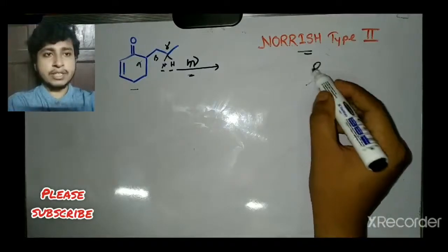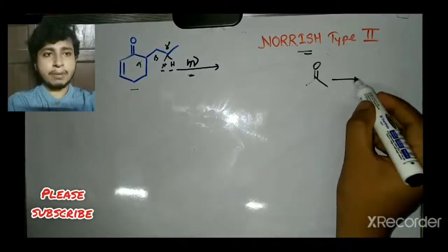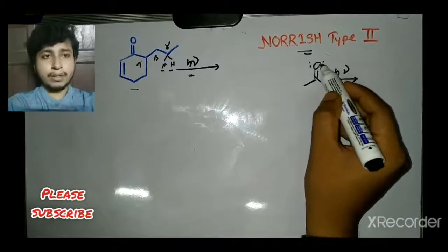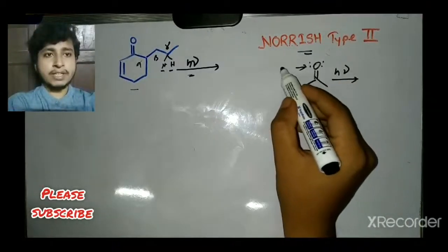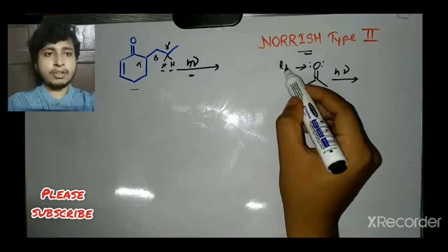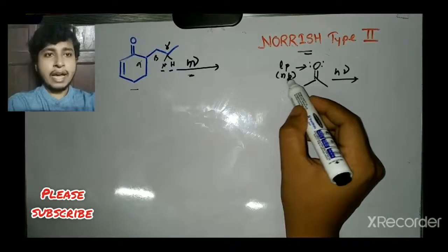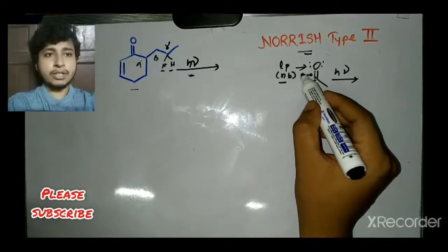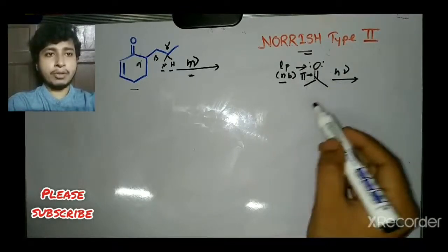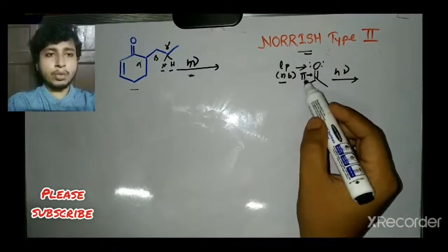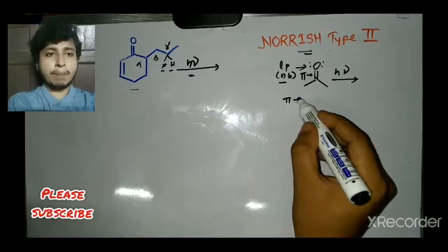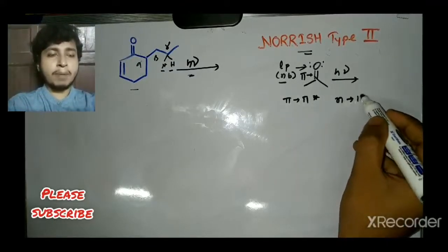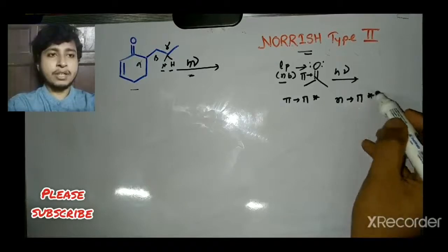When a carbonyl compound is treated with hν, the oxygen lone pair — the non-bonding electrons on oxygen — and the pi bond between carbon and oxygen allow two types of electronic transitions: one is the π→π* transition, and the other is the n→π* transition.